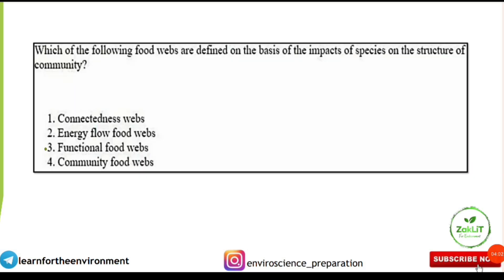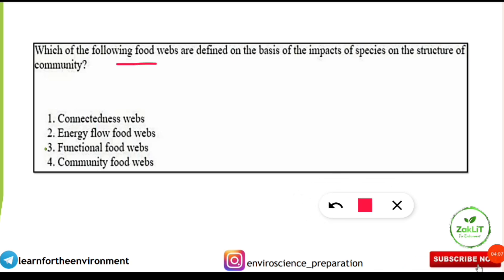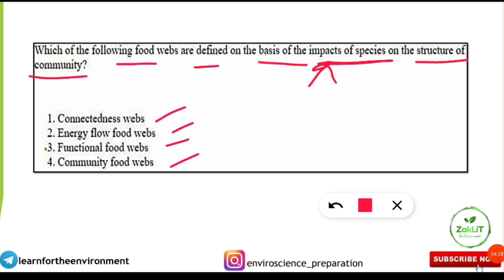This question was asked from the ecology section and was new for most students. The question was: which of the following food webs are defined on the basis of the impacts of species on the structure of the community? The options were connectedness web, energy flow food web, functional food web, or community food web. The correct option is option number 3 — functional food web.